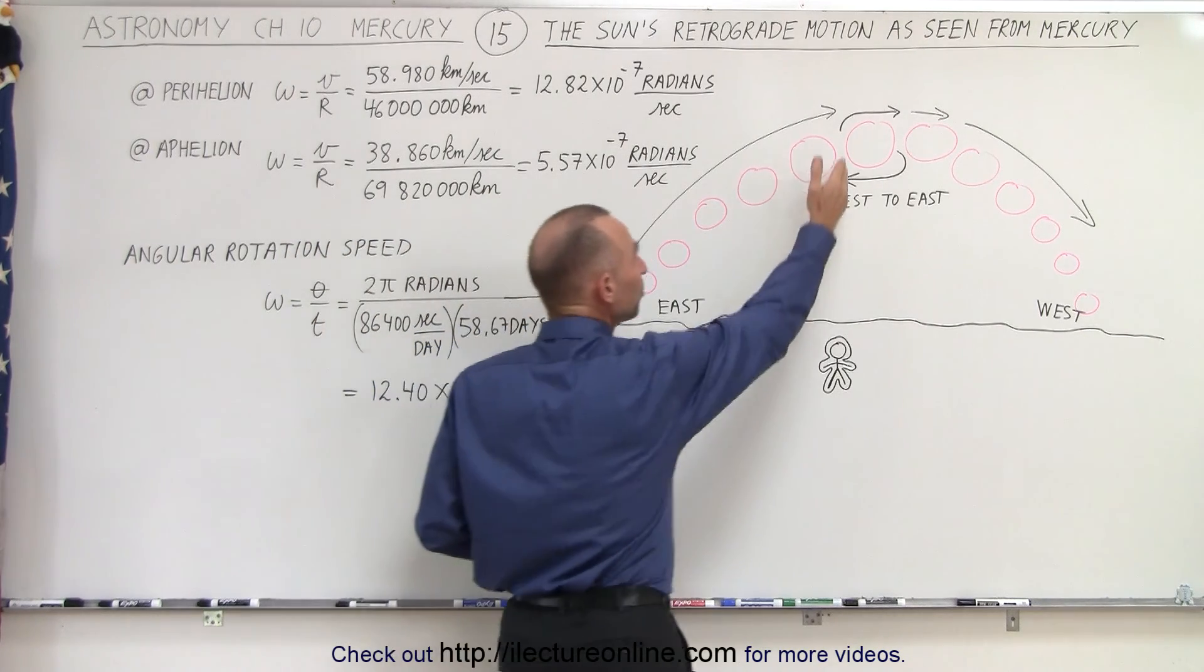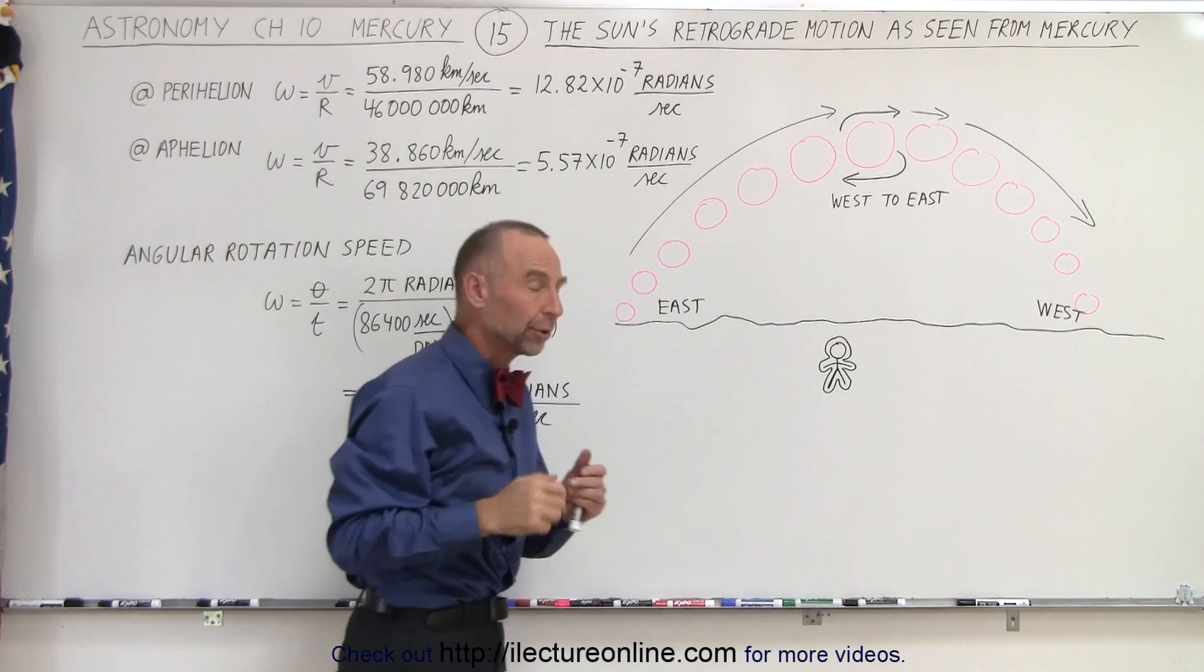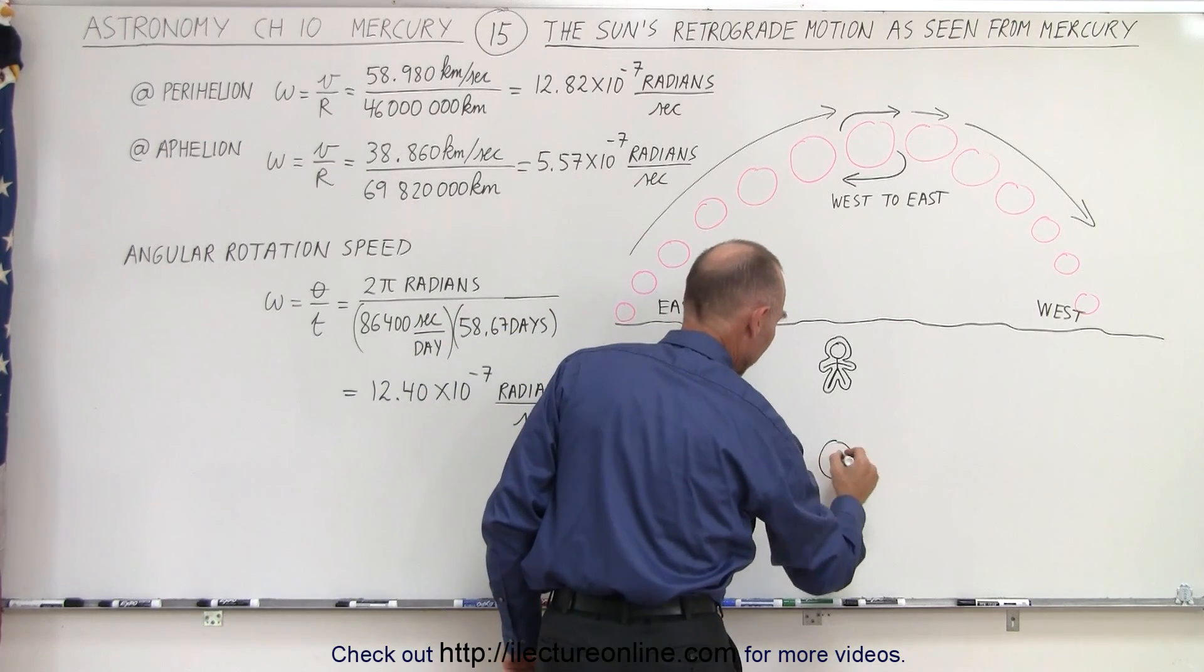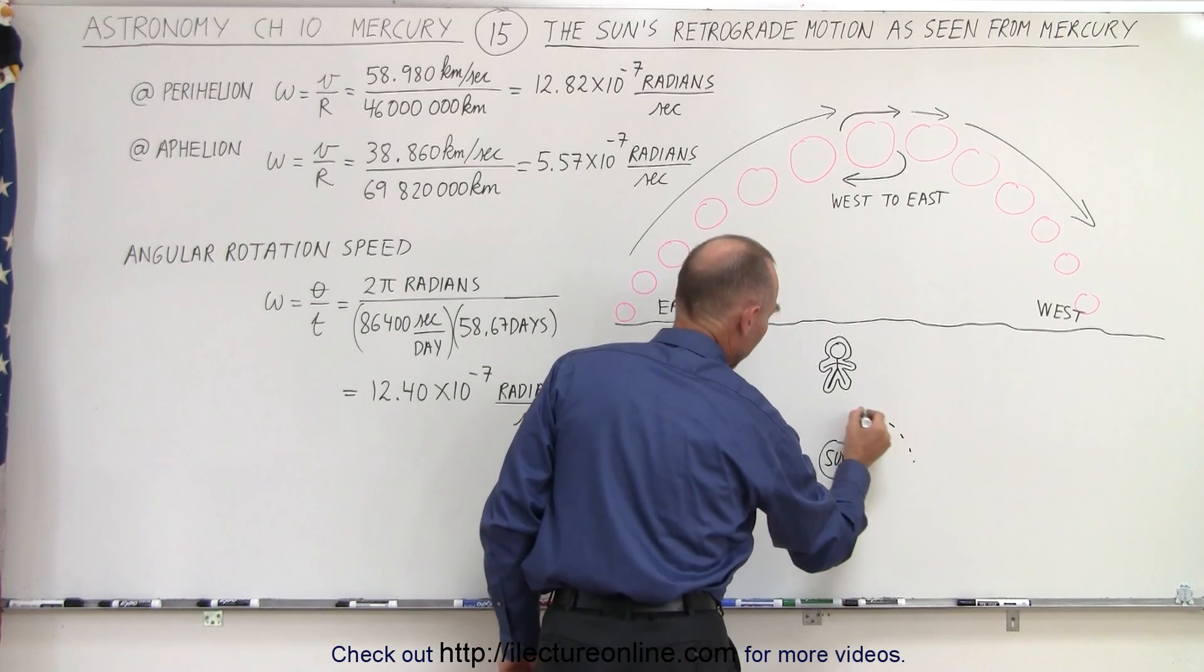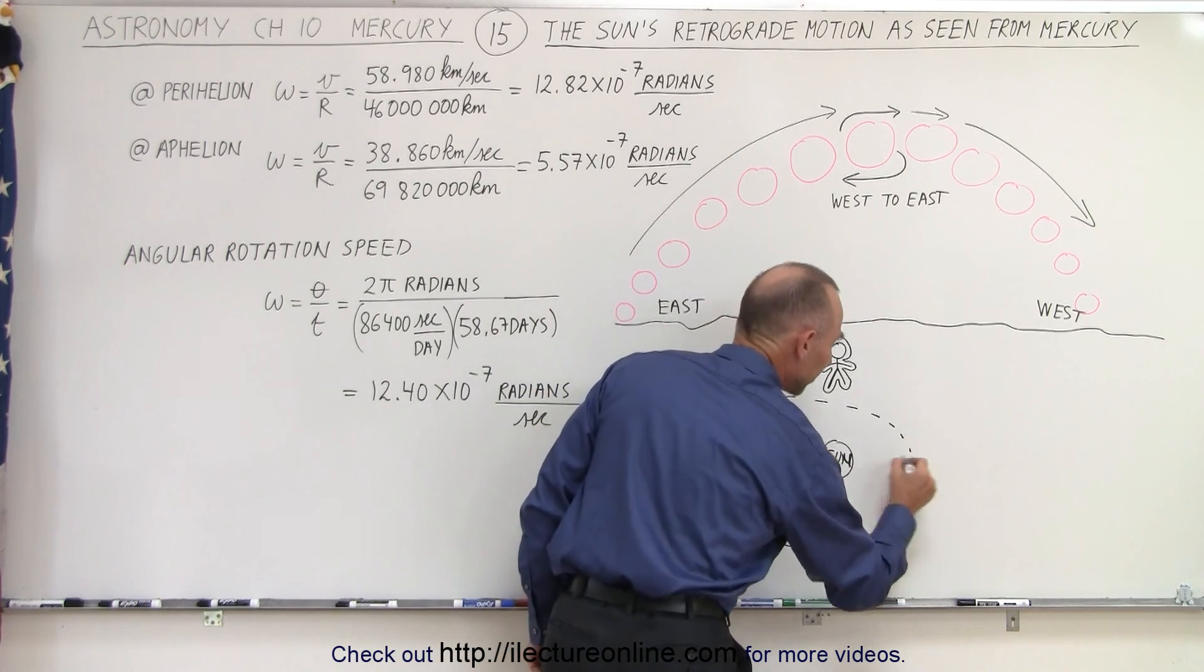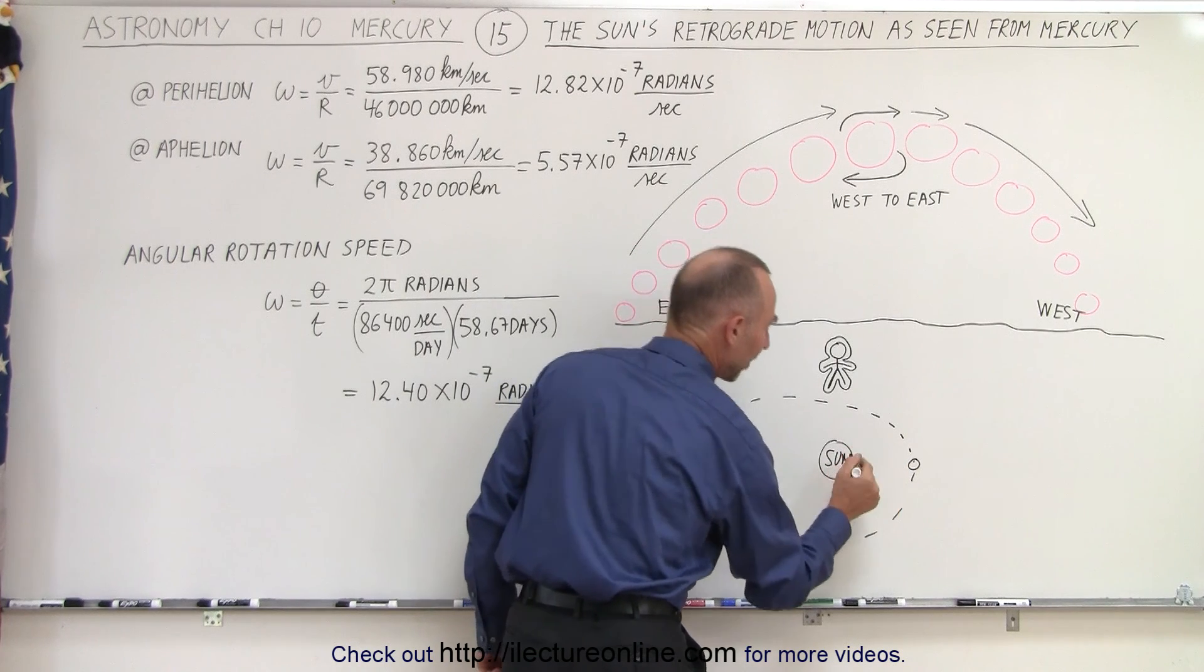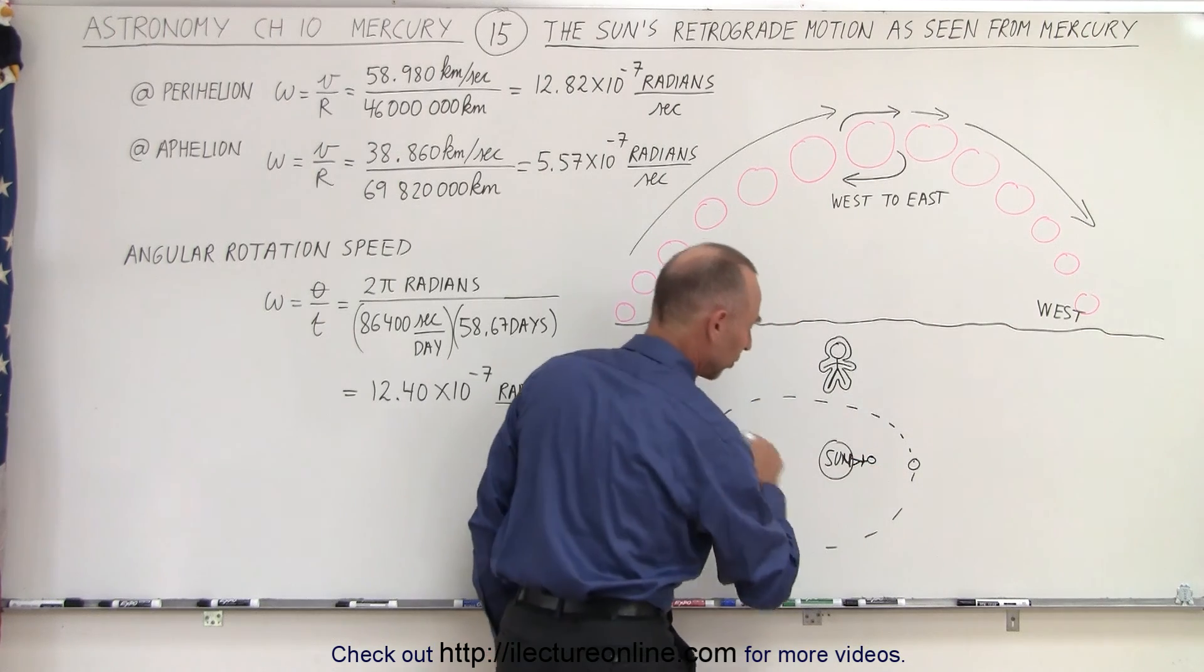If the noon position coincides with the perihelion point on the Mercury orbit, let me show you what that looks like. If I have the Sun right here and we have the orbit of Mercury, it's a very elliptical orbit, so this would be the aphelion position, this would be the perihelion position.